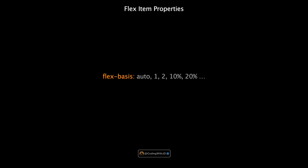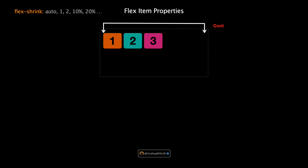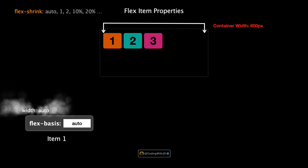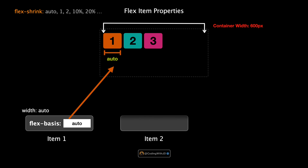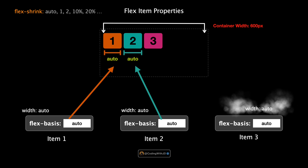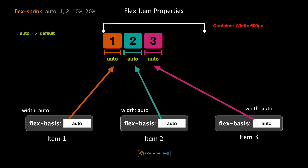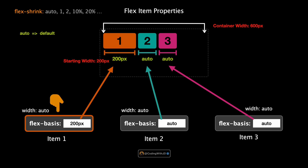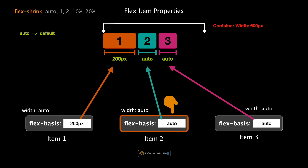Next is flex-basis, which sets the initial size of a flex item before any available space is distributed according to flex-grow or flex-shrink. By default, flex-basis is set to auto, meaning the item size is based on its content or specified width. Now let's change the flex-basis of the first item to 200px — with flex-basis set to 200px, the first item now has a starting size of 200 pixels regardless of its content, acting as the base for any growth or shrinkage.